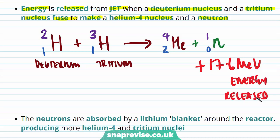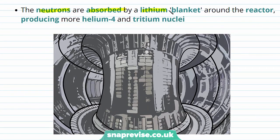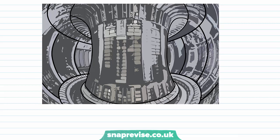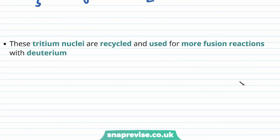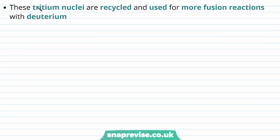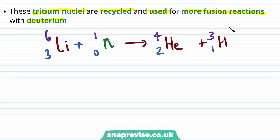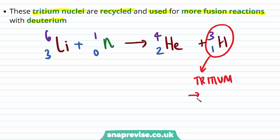One advantage of fusion over fission is that it doesn't produce any radioactive waste. The neutrons are absorbed by a lithium blanket around the reactor — lithium-6, with six nucleons and three protons — which produces more helium-4 and tritium nuclei. The tritium is recycled and used for more fusion reactions with deuterium, making the process cyclical.